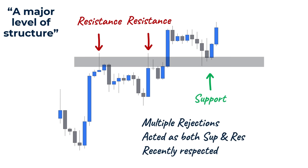A double top or bottom is a popular M-shaped reversal pattern that price action traders widely use. We have a simple rule to identify a valid double top or bottom pattern. In the case of a double top, draw a box between the highest candle close and the wick of the first test. The second test's wick must at least touch the box, and the body can't close beyond it.